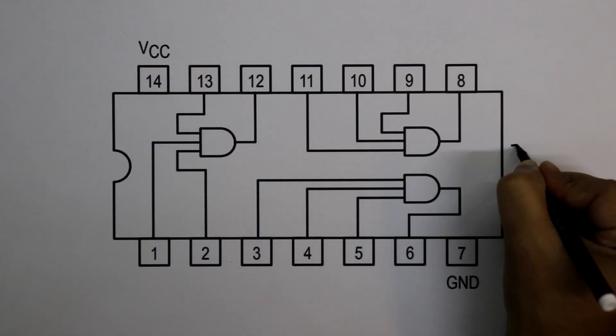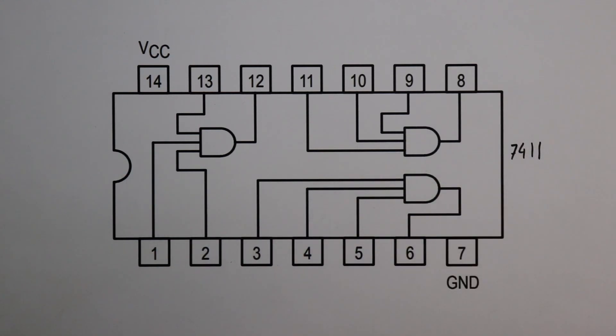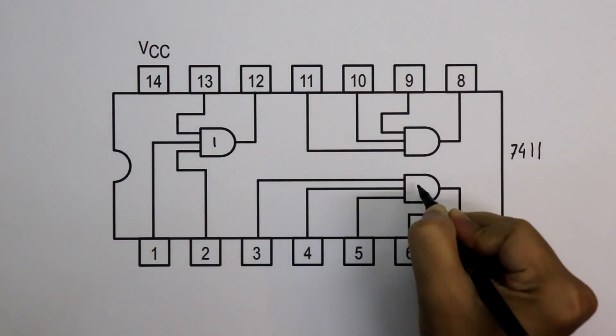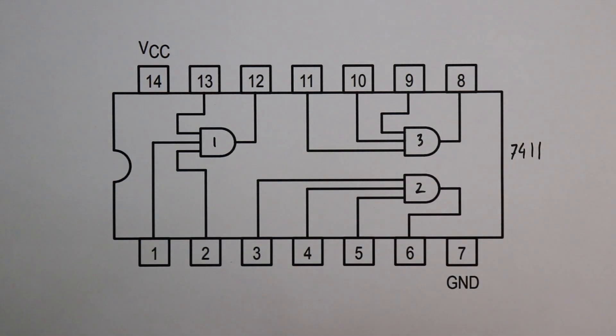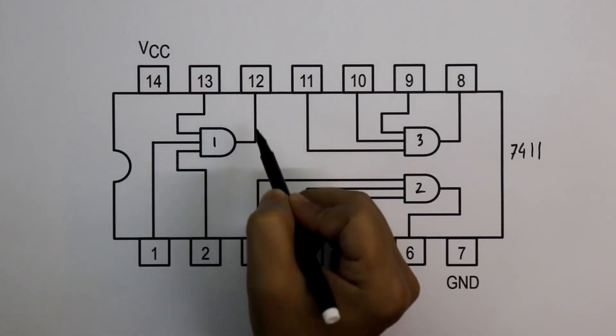This is the pin diagram of IC7411. It is a 3-input AND gate, it has 3 gates: gate number 1, gate 2, and gate 3. As you can see, for gate number 1, pin number 1, 2, and 13 are the inputs and pin number 12 is output.